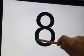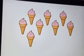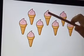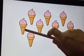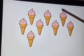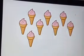Let's start with new number. This is number 8. Now, let's count the objects. Oh, how many ice creams over there? Let's count. 1, 2, 3, 4, 5, 6, 7, 8. Good job.